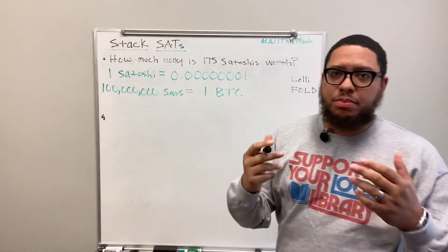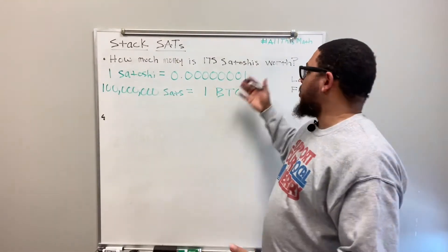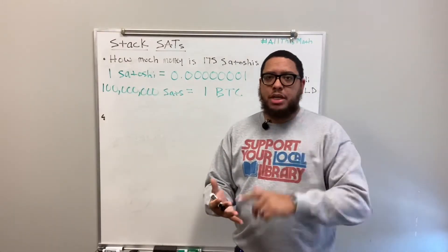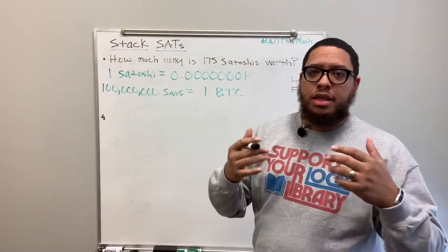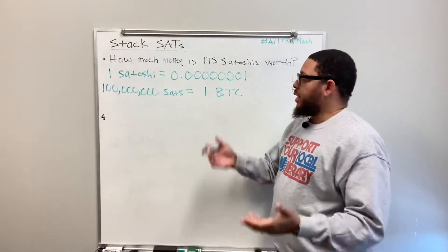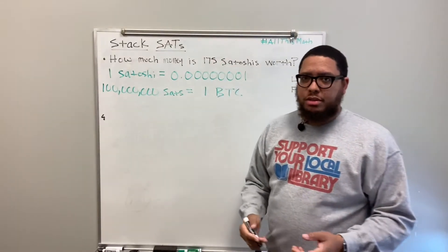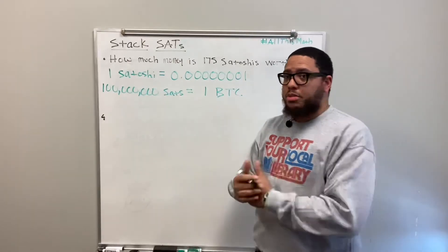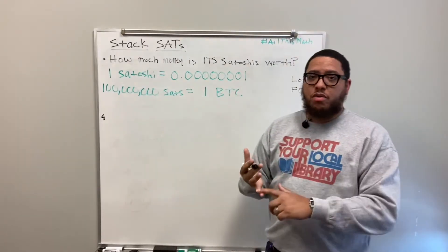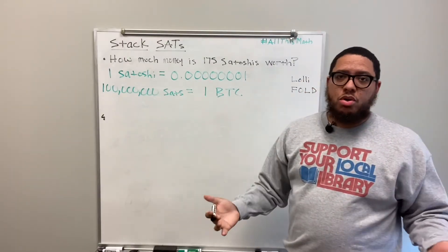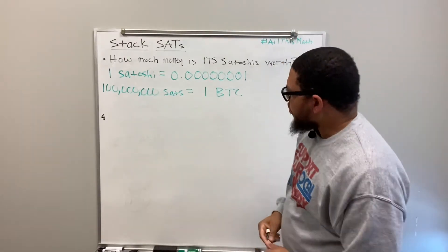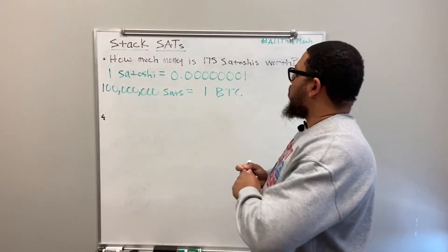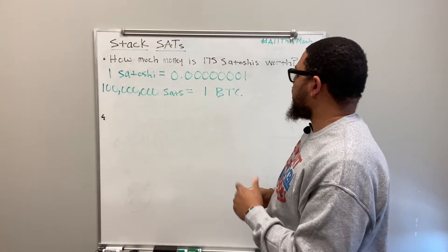That brings us to the main point of this video: if somebody gets 175 satoshis and doesn't know what a satoshi is or how much money that represents in U.S. dollars, they won't care about it. By the end of this video, you'll know not only how to figure out how much money that is, but also what it really means. We're dealing with proportional relationships.